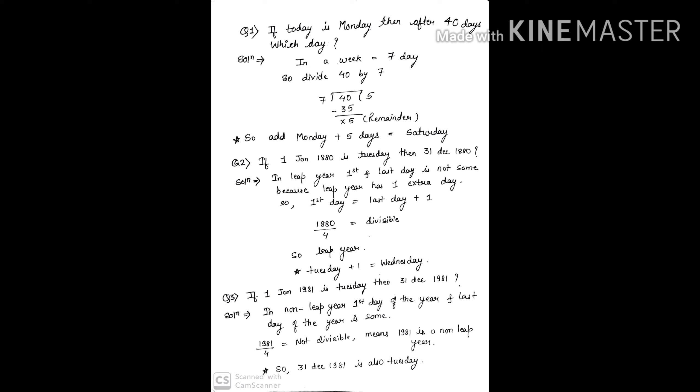And yes, it is divisible, so 1880 is a leap year. So now we will do Tuesday plus one means one day after Tuesday, it will be Wednesday. So friends, Wednesday will be your answer. 31st December 1880 is Wednesday.